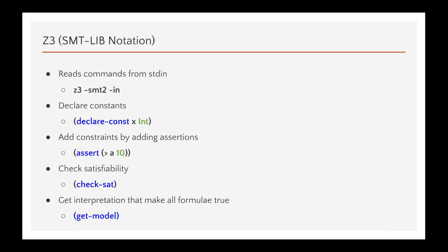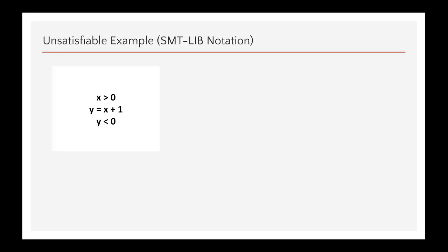So, this is the standard Z3 SMT library notation. We can add constraints by adding assertions. So, for example, this means that a is a variable which is greater than 10. And after you add the assertions, you can check the satisfiability using check-sat and then you can get the interpretation that makes the formula true using get-model.